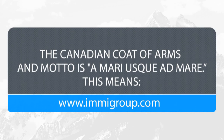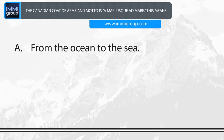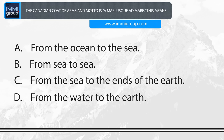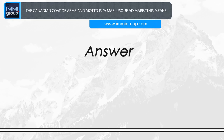The Canadian Coat of Arms and motto is 'A Mari Usque Ad Mare'. This means: A. From the ocean to the sea. B. From sea to sea. C. From the sea to the ends of the earth. D. From the water to the earth. Answer: From sea to sea.